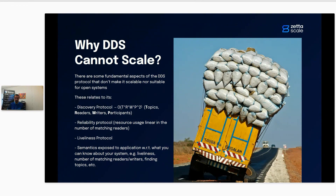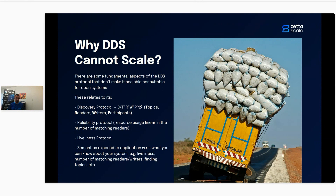The liveliness protocol is another example — when you need liveliness, extra messages are sent between all participants. There are semantics exposed in DDS where you can know for each writer what the matching readers are, if they are alive or gone. This has a cost — you need to maintain all the liveliness between all readers and their matching writers, both in terms of messaging and memory. It can work in a very controlled environment with a limited scale, but in a large system with several robots in a cloud environment, it will cause troubles.